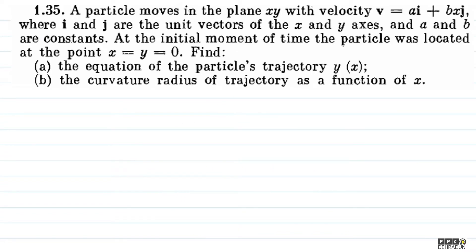The question says: a particle moves in the xy plane with velocity vector v = a î + bx ĵ, where î and ĵ are the unit vectors of the x and y axes, and a and b are constants. At the initial moment of time, the particle was located at the point x = y = 0. Find: (1) the equation of the particle's trajectory, i.e., y as a function of x, and (2) the curvature radius of the trajectory as a function of x.